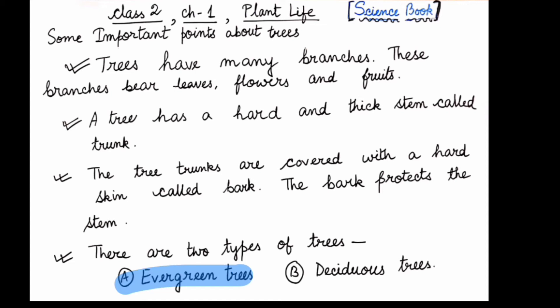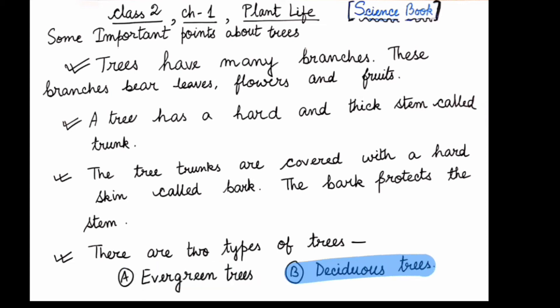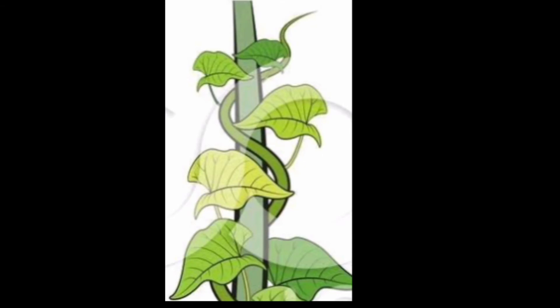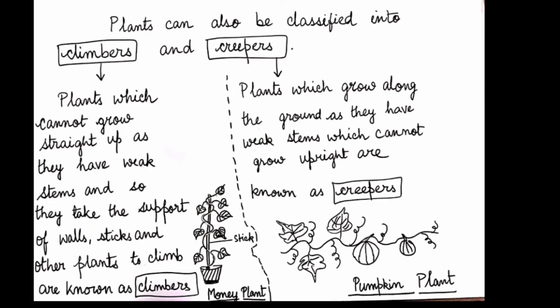Evergreen trees keep their leaves all year round — they are always green. Deciduous trees annually shed their leaves. An example of an evergreen tree is the pine tree, and an example of a deciduous tree is the oak tree, which annually sheds its leaves.